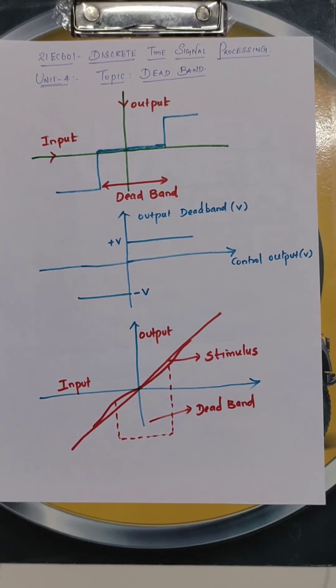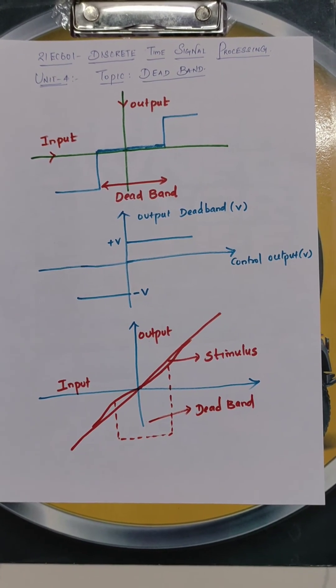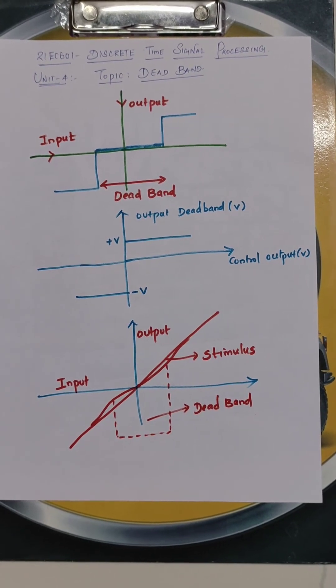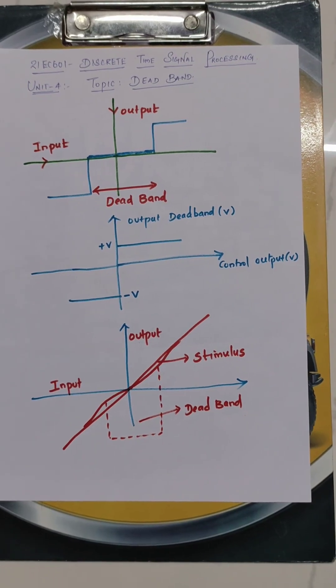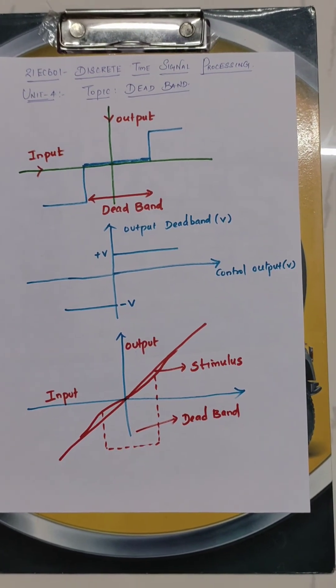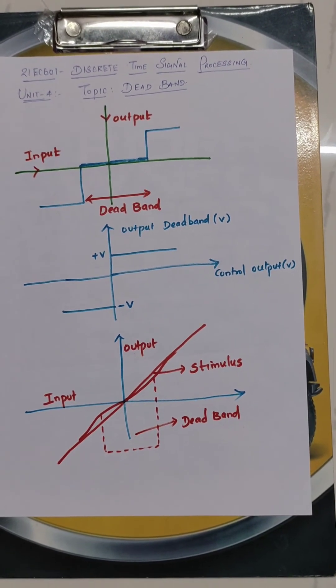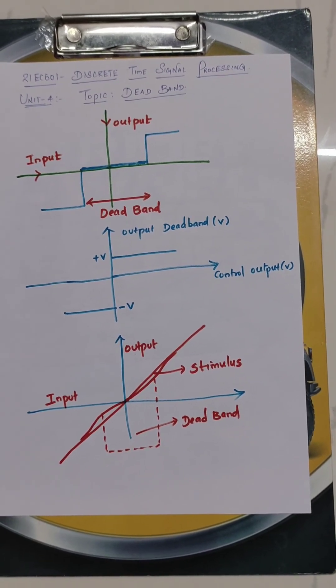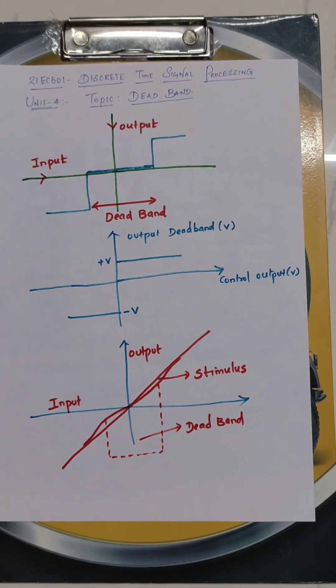Next, we have another set of diagram. Again, the input to the output, output deadband voltage V with controlled voltage V. Same positive value and negative value. See the signal value where the deadband lies between from the denominator of minus 1, the lower part to the upper part of plus 1. In between, the value remains constant. This is called deadband filter because the value cannot be extended more.